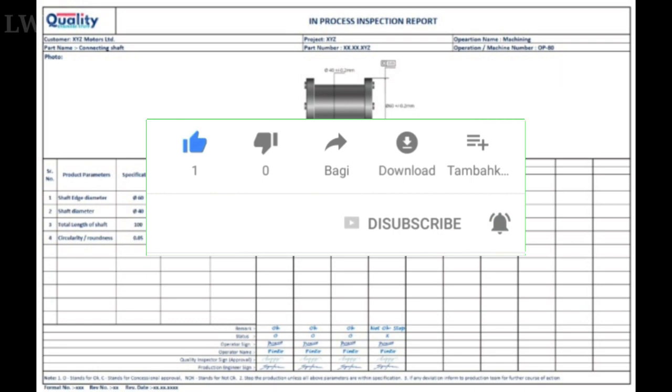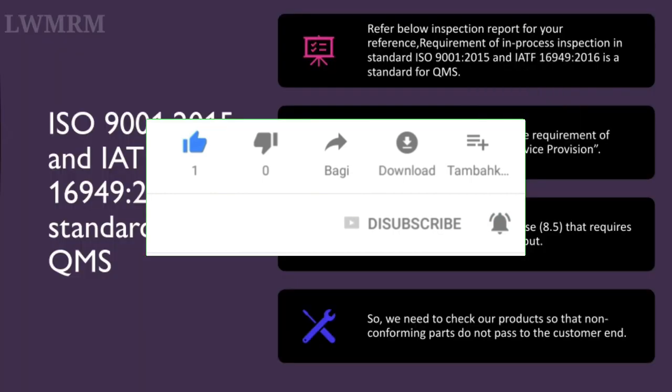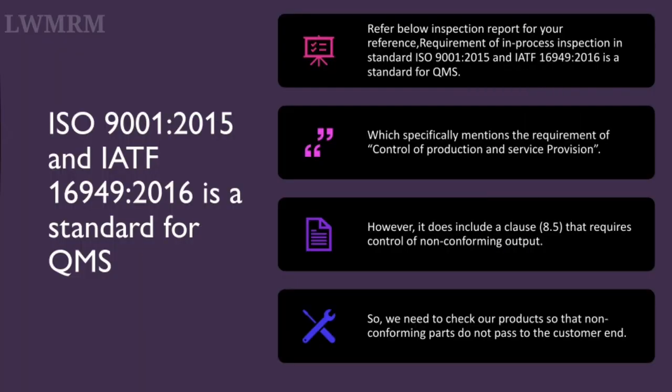Requirement of in-process inspection in standards. ISO 9001:2015 and IATF 16949:2016 are standards for QMS, which specifically mention the requirement of control of production and service provision. It includes clause 8.5 that requires control of non-conforming output. So, we need to check our products so that non-conforming parts do not pass to the customer.